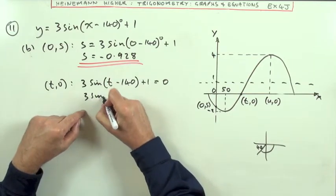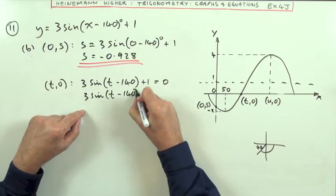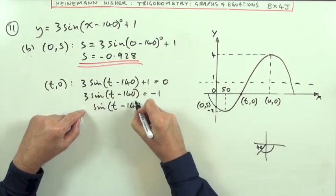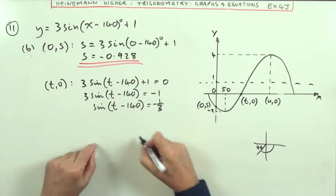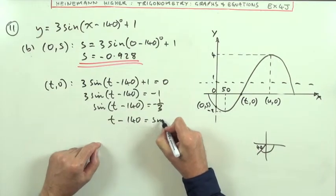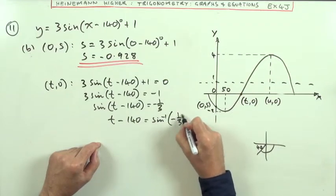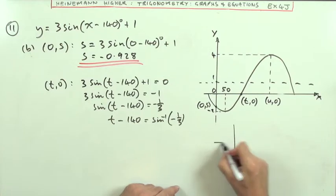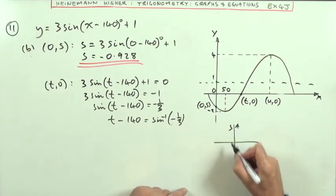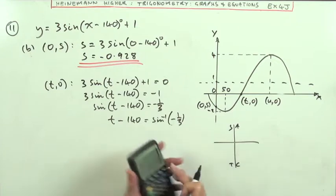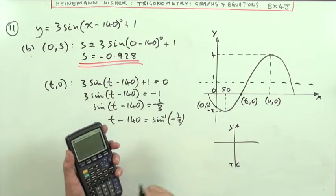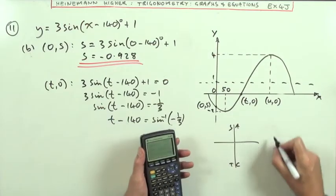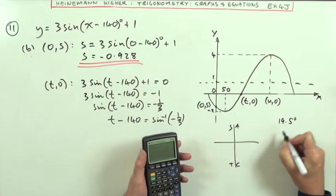So 3 sine T minus 140 will be negative 1. Sine T minus 140 will be negative 1 third. T minus 140 will be inverse sine of negative 1 third. That's not one of the ones that I know, so I'm going to have to cast that. The negative will get taken care of in the cast diagram. I'll have to put that into my calculator as inverse sine of 1 third. And that's going to give me 19.5 degrees.